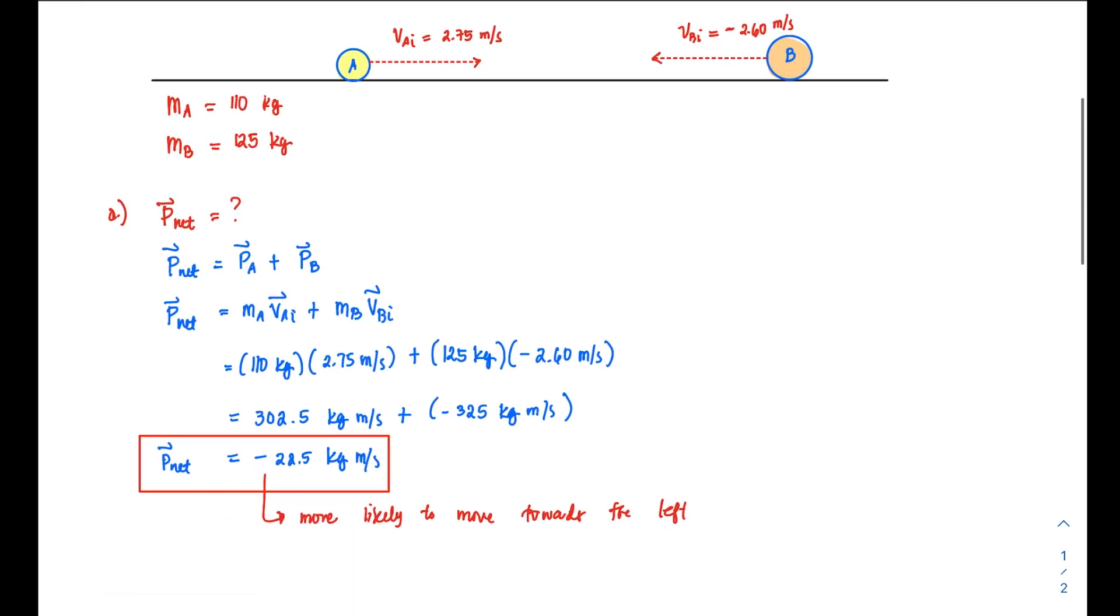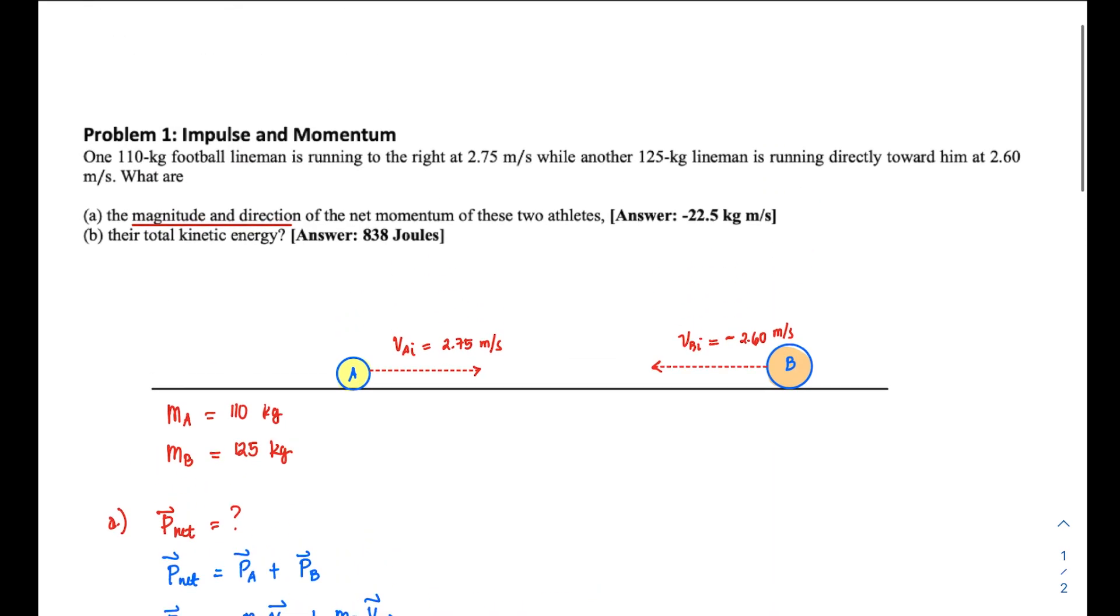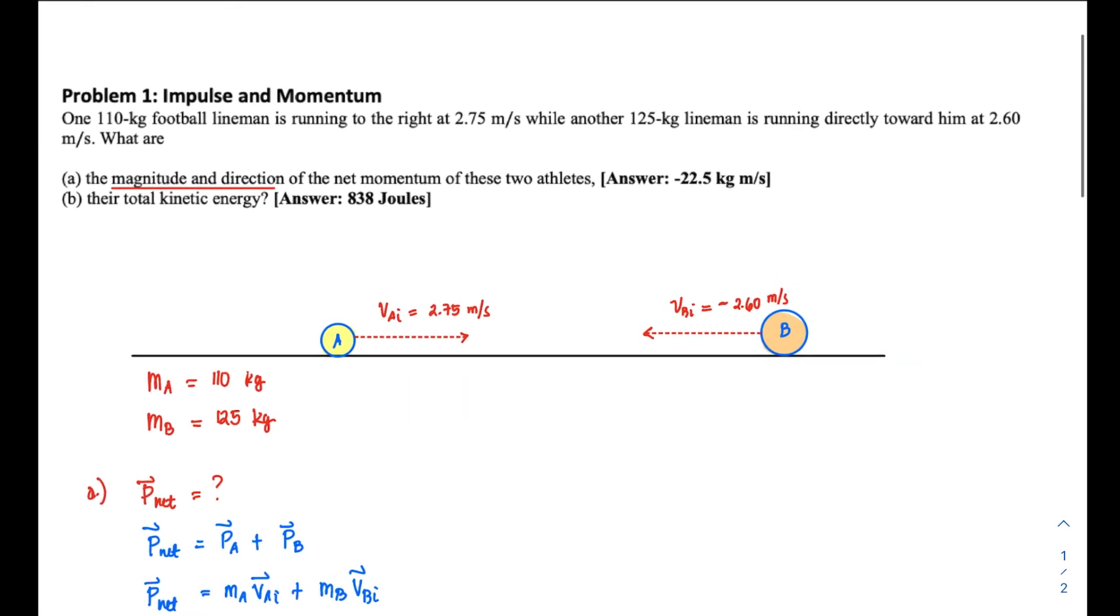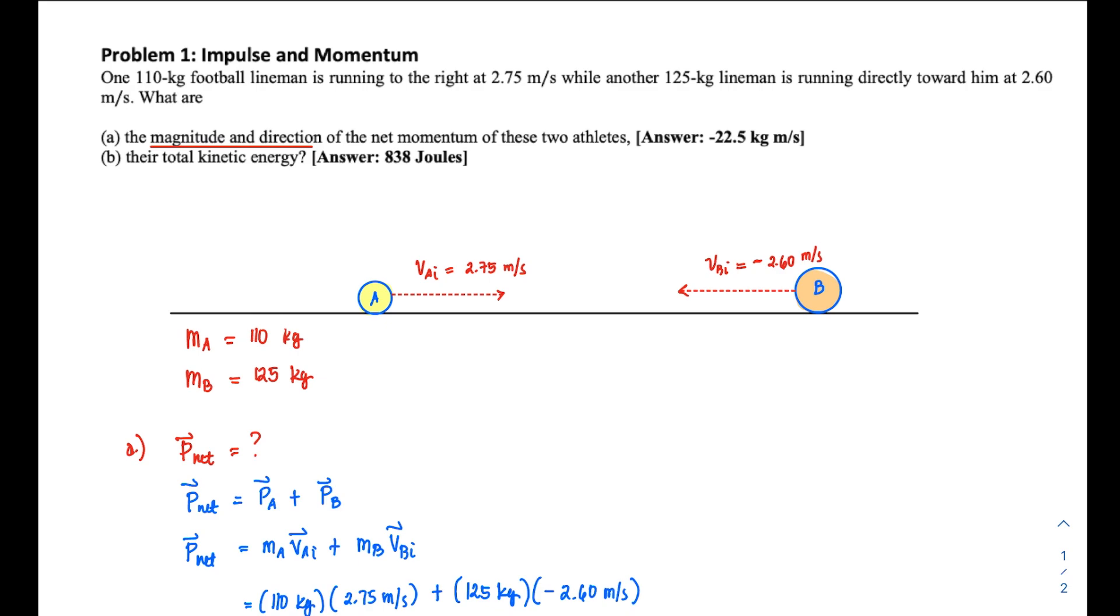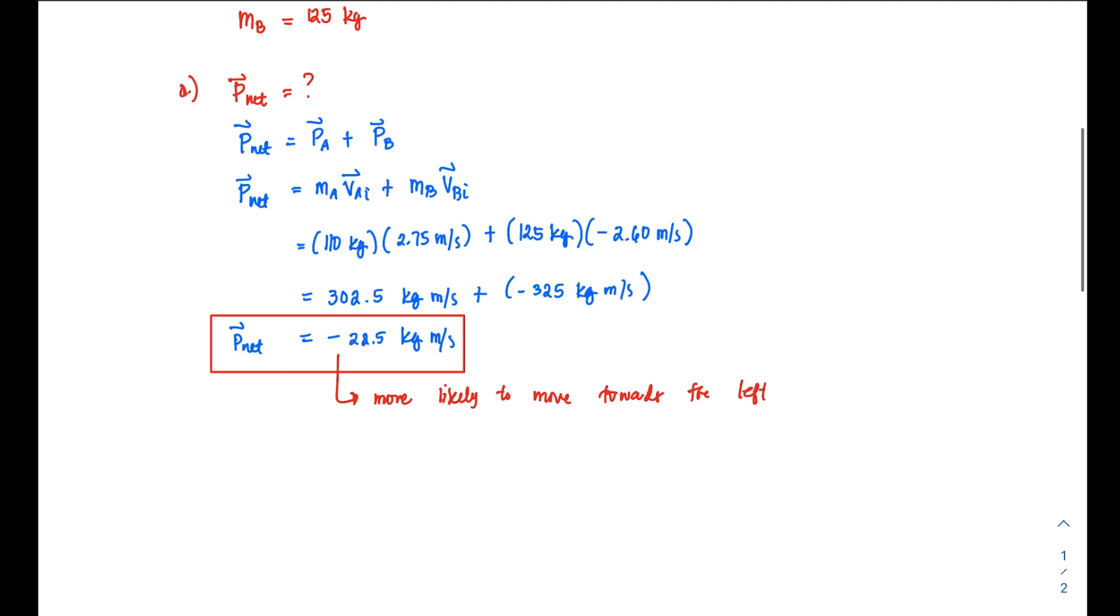net momentum will also have a negative sign. For part (b), it asks for the total kinetic energy. If you're asked for total kinetic energy, that's not vector addition anymore but algebraic addition, because kinetic energy—or energy in general—is a scalar, so you don't